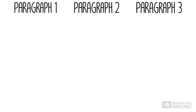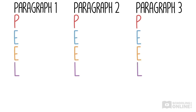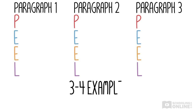Usually when we write an essay, we have three main points and spend a paragraph on each of them. If we just used a normal PEEL analysis with one example in each paragraph, our paragraphs would be very short. To fix that and make our essay responses more detailed, we try to include between three and four examples in each paragraph.